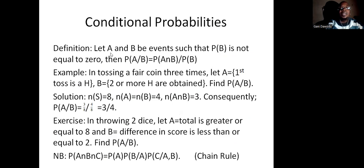Conditional probability. Let A and B be events such that probability of B is not equal to zero. Then probability of A given B is equal to probability of A intersection B over probability of B. An example is when you toss a fair coin three times. Let A be the event that the first toss is heads, and B be the event that two or more heads are obtained.